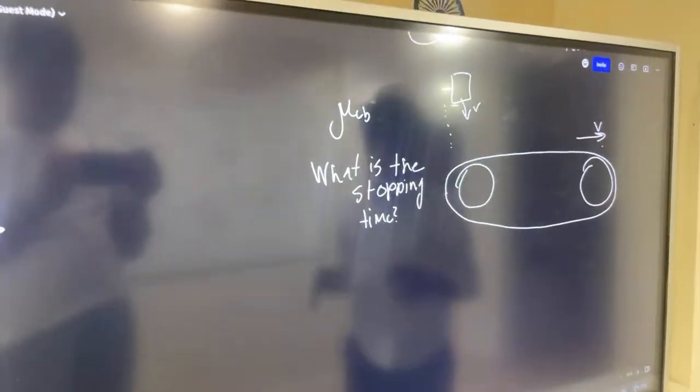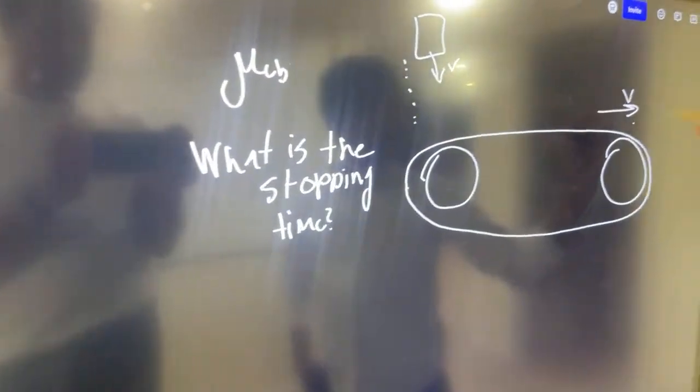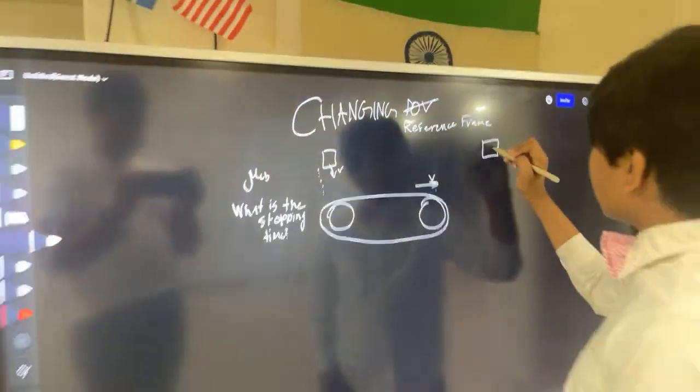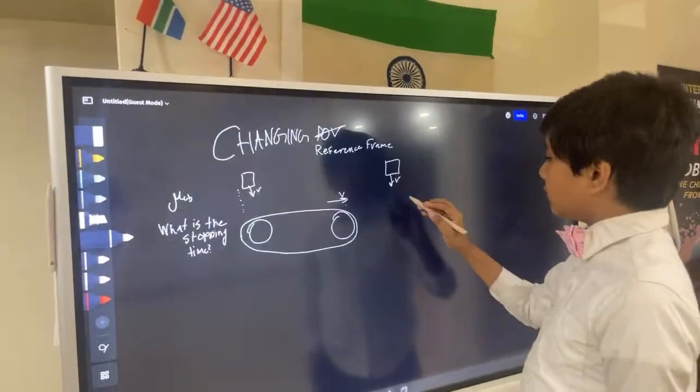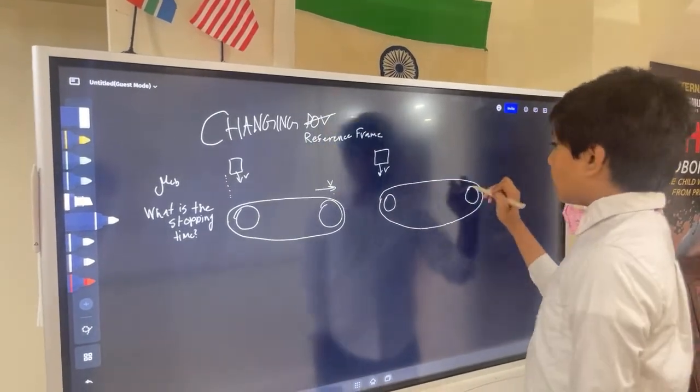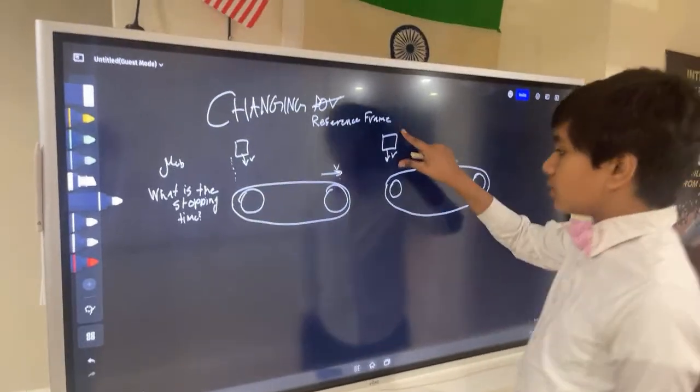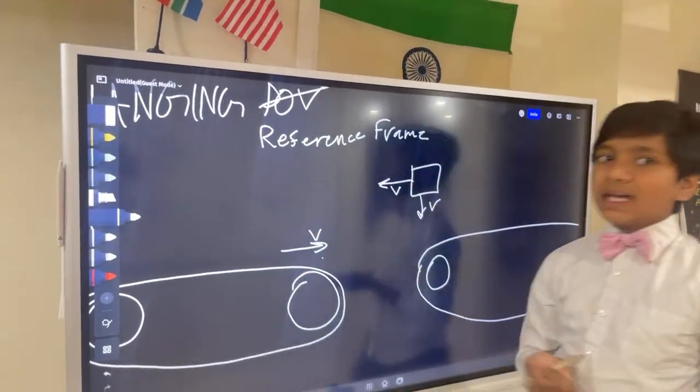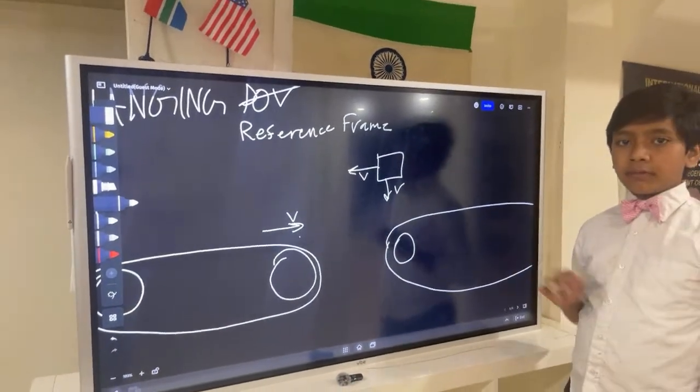Well, what we have to do is, because having the velocities of two different objects makes it a little complicated, we can change to the reference frame of the conveyor belt. In the reference frame of the conveyor belt, the conveyor belt is not moving. So, the block, as a result, has to be moving this way instead, in the reference frame of the conveyor belt.